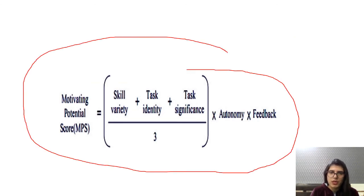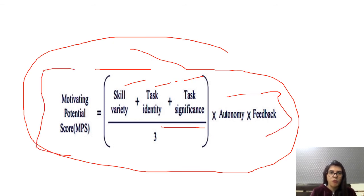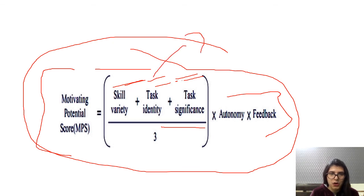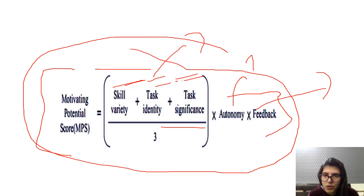The motivating potential score (MPS) formula related to this model is: MPS = [(Skill Variety + Task Identity + Task Significance) / 3] × Autonomy × Feedback. Skill variety, task identity, and task significance together give meaningfulness of work; autonomy develops responsibility; and feedback gives knowledge of outcomes.